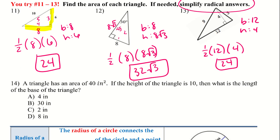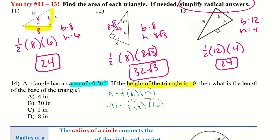For number 14, a triangle has an area of 40 inches squared. If the height of the triangle is 10, what is the length of the base? We plug into A equals one-half base times height: 40 equals one-half times B times 10. Combining the one-half and the 10 gives 40 equals 5B, then dividing by 5 gives B equals 8. So the base is 8 inches long.